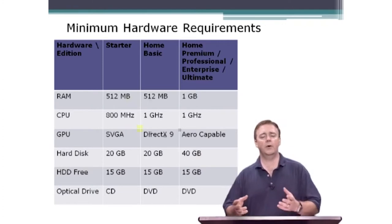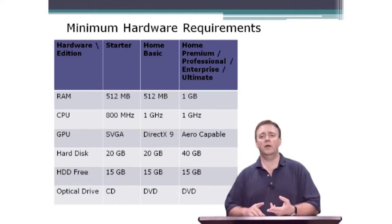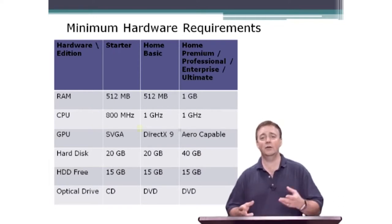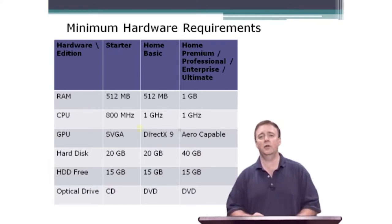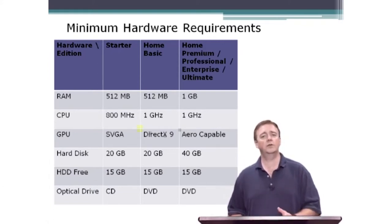If you told me you needed a gig of RAM, a gigahertz processor, a 40 gig hard drive, and a DVD-ROM drive, I'd say that's easy — I could get that as scrap material and put it together very simply. So the hardware requirements are not that stringent for Windows 7.